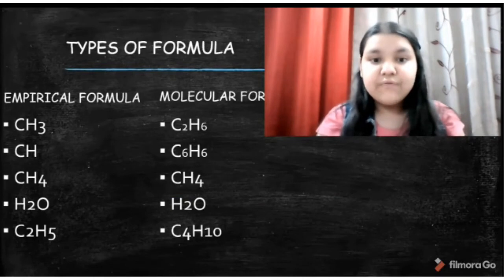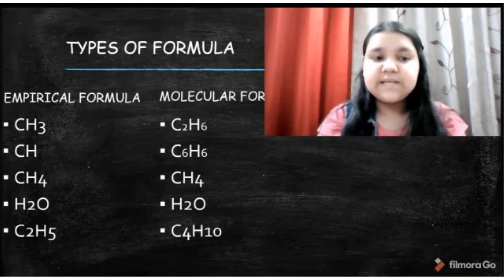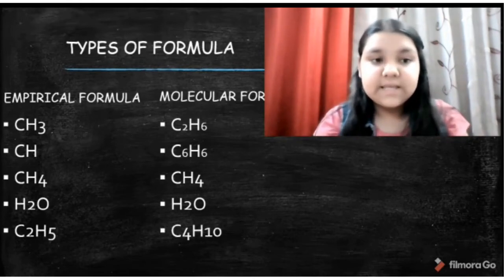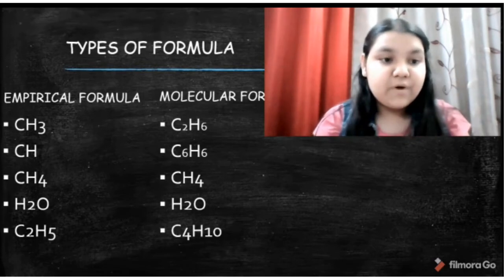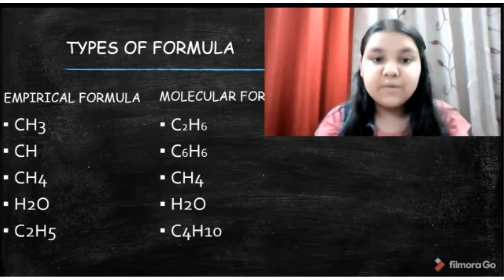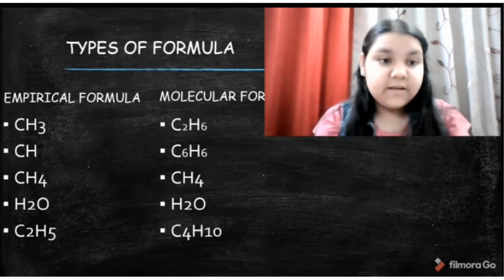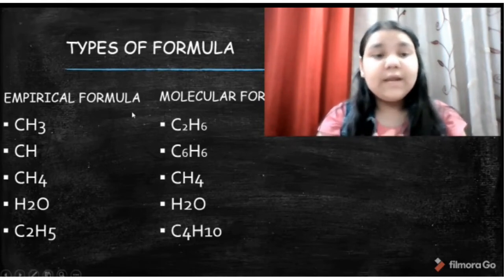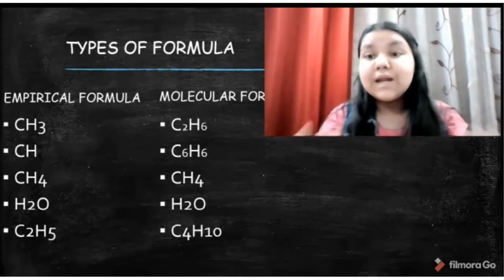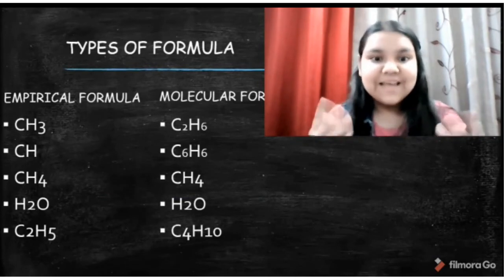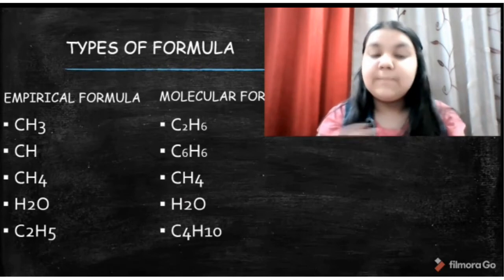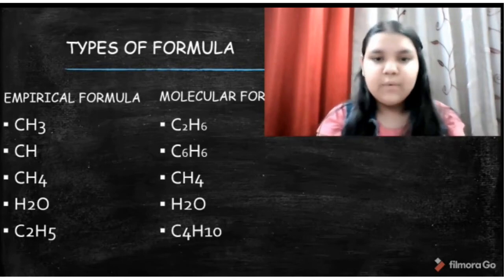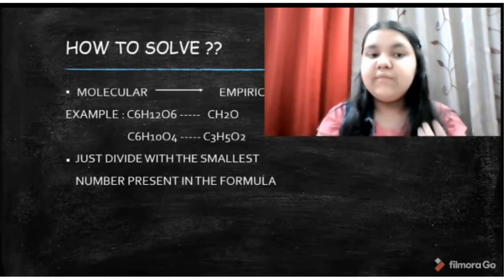The molecular formula is the representation of any formula. Here we will learn the difference between molecular formula and empirical formula. The example of empirical formula is CH3 and molecular formula is C2H6. CH3 is in the simplest form. Empirical formula only tells you what elements are present, but molecular formula tells you what elements are present plus how many times they are present.